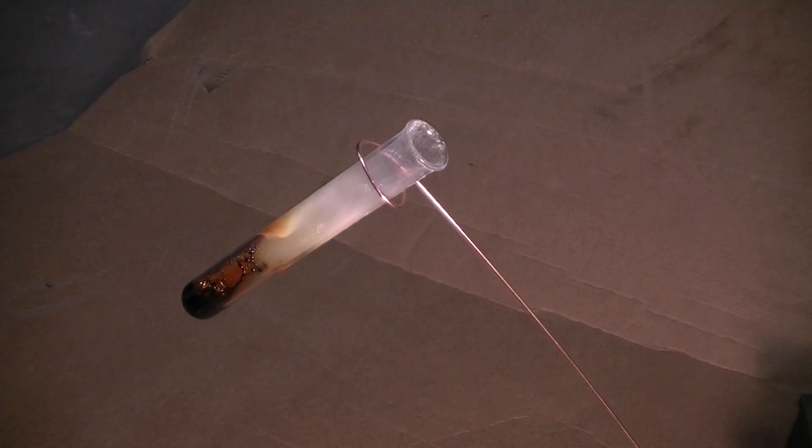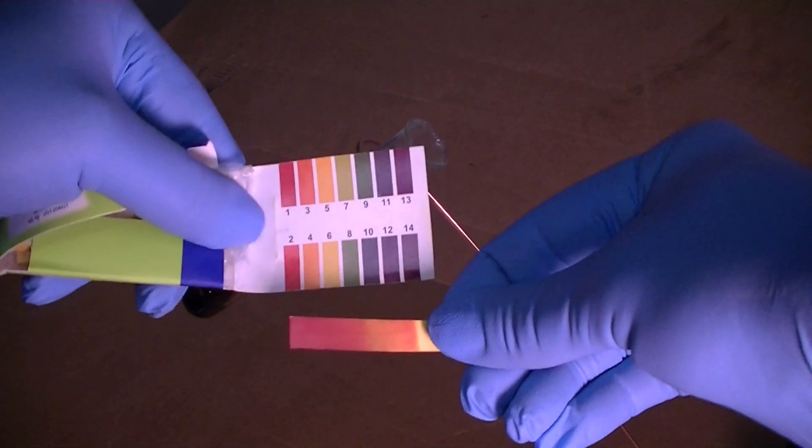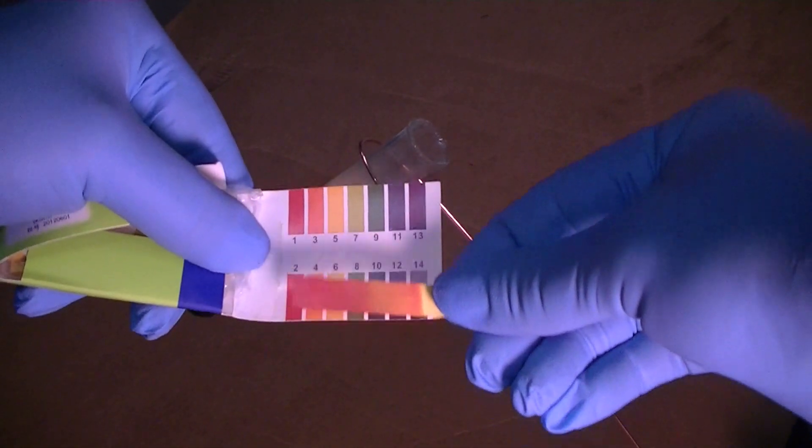Looking at a color chart confirms that a red color has a very low pH of around 1, which is acidic.